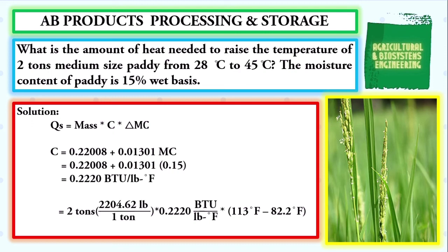We have to convert the tons unit to pounds. We will use the conversion factor, 1 ton equals 2204.62 pounds. We cancel out units, then we solve, giving us a final value for the heat energy required to raise the temperature of the sample to be 30148.62 BTU.